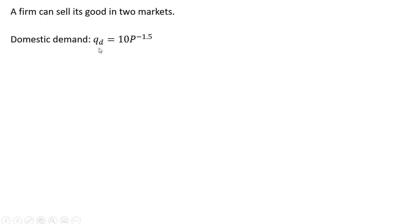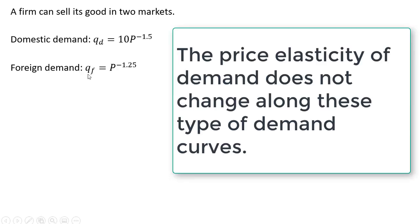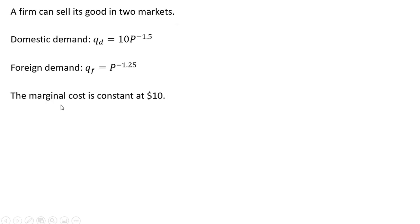The domestic market's demand is given by q_d = 10P^(-1.5), and the foreign market's demand is given by q_f = P^(-1.25). These are constant elasticities of demand. The marginal cost is constant at $10 in both markets. What is the profit-maximizing price if the firm uses group price discrimination?